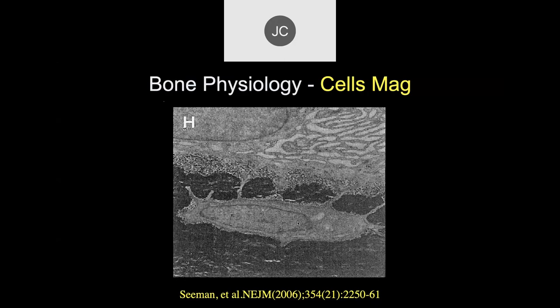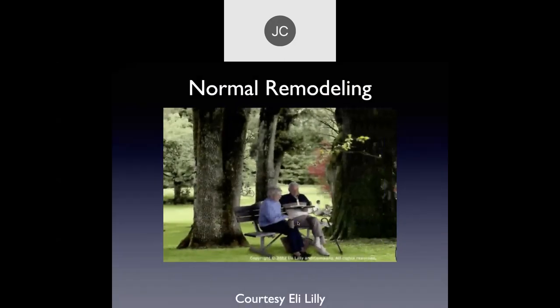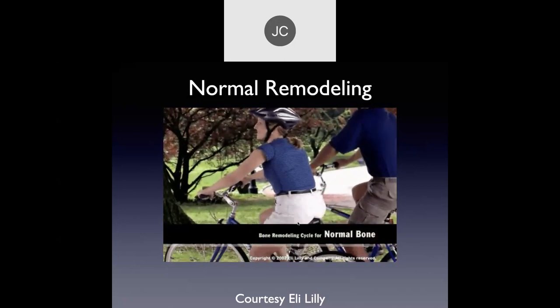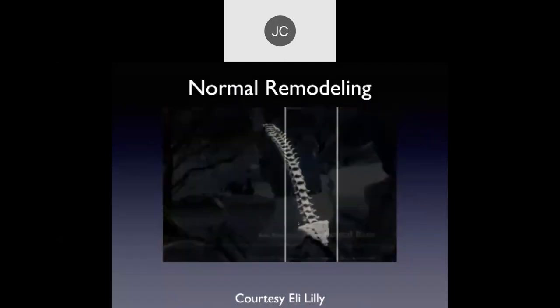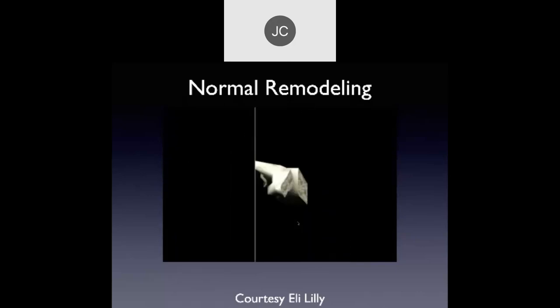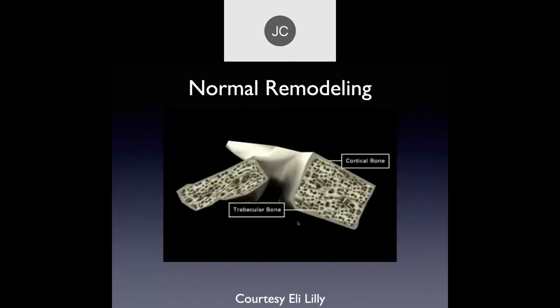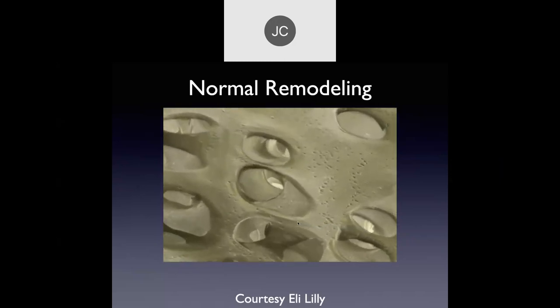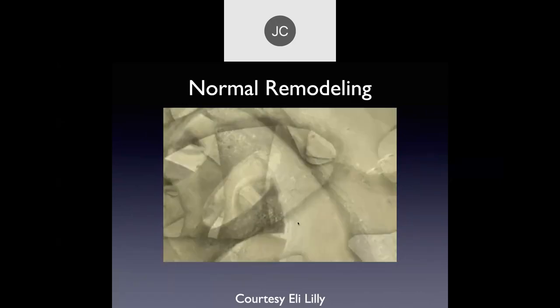I'd like to spend more time on trabecular bone, because that's where we see a lot of pathology on MR that we don't see on x-rays, and we have to evaluate what the abnormal MR signal looks like. This scene depicts how bone is remodeled in the spine of a healthy premenopausal woman. The vertebral body is composed of two main types of bone — an outer shell of dense cortical bone surrounding trabecular bone, which is comprised of a honeycomb-like network of trabecular plates and bars.